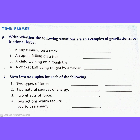Children, there is an interesting homework. Part A: Write whether the following situations are an example of gravitational or frictional force — first, a boy running on a track; second, an apple falling off a tree; third, a child walking on a rough tile; fourth, a cricket ball being caught by a fielder. Part B: Give two examples for each of the following — two types of forces, two natural sources of energy, two effects of force, and two actions which require you to use energy.